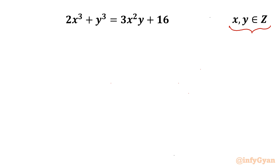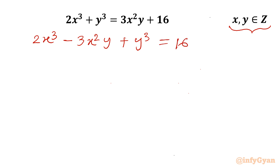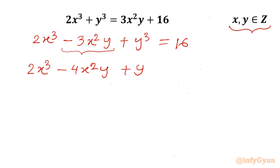Let's get started by writing our equation. I will rearrange it as 2x³ minus 3x²y plus y³ equal to 16. Now I will split minus 3x²y as minus 4x²y plus x²y, giving us 2x³ minus 4x²y plus y³ plus x²y equal to 16.